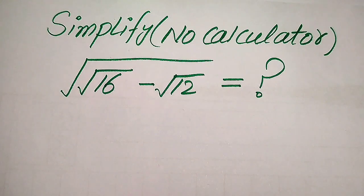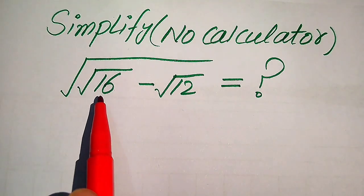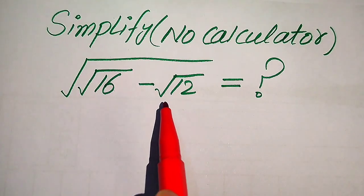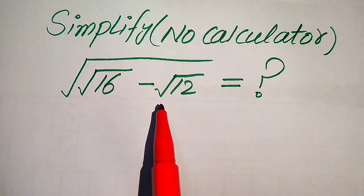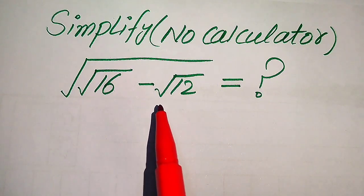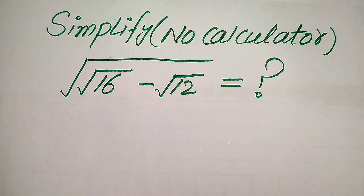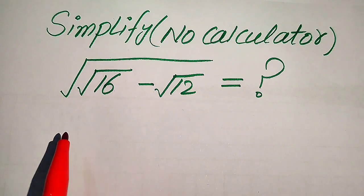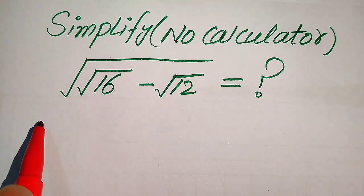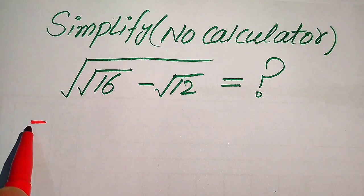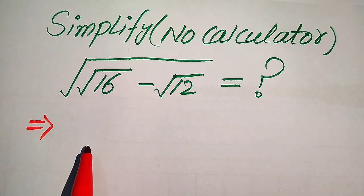Hello everyone. How to simplify this nice algebraic expression without using a calculator: we have the square root of 16 minus square root of 12, and its whole square root. We write this radical expression into simplified form. We solve this problem using a very tricky method — if you have another method in mind, please write it in the comment section.